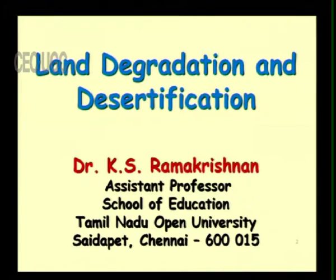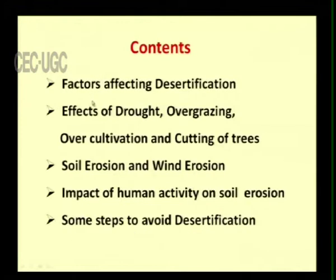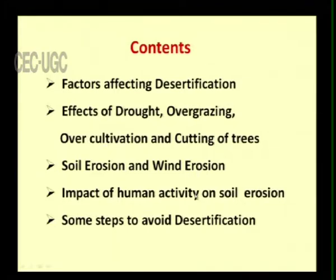The content we are going to discuss includes the factors affecting desertification, the effects of drought, overgrazing, over-cultivation and cutting of trees, soil erosion and wind erosion, the impact of human activity on soil erosion, and some steps to avoid desertification.